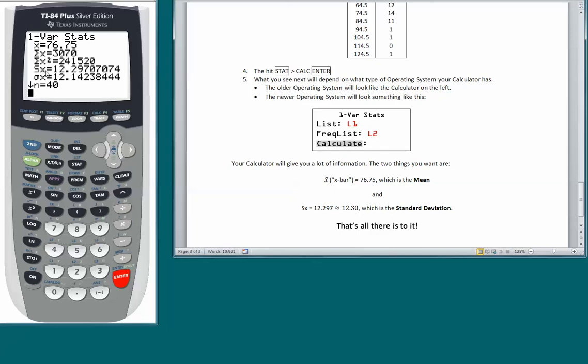The standard deviation is this thing Sx. You see Sx right there. That is the standard deviation. I wrote 12.297, which we round to 12.3 or 12.30. That's the standard deviation. It's as simple as that.